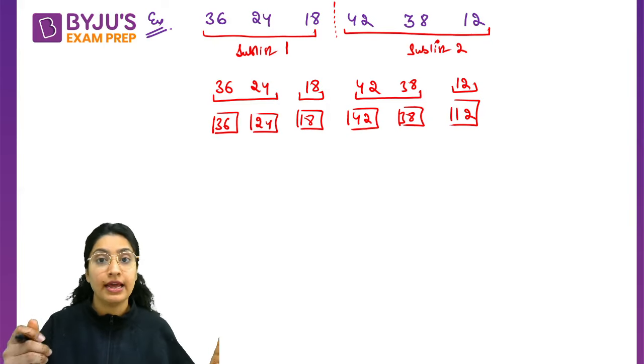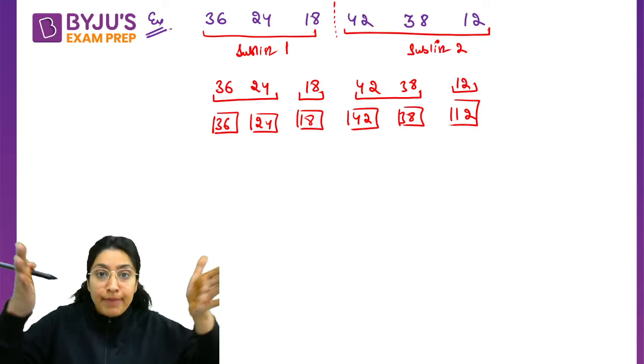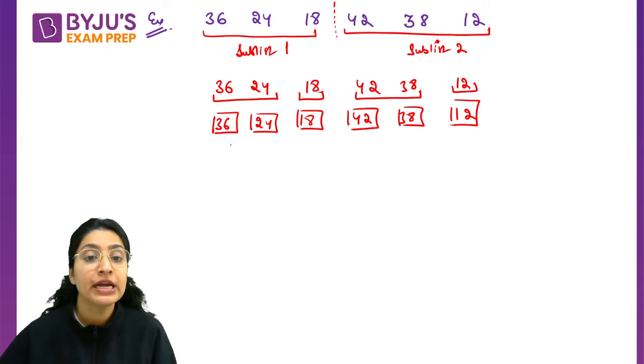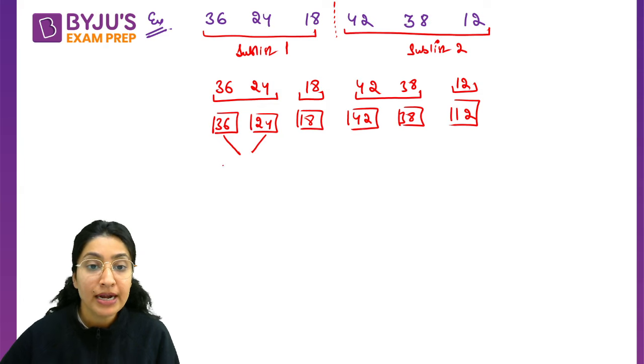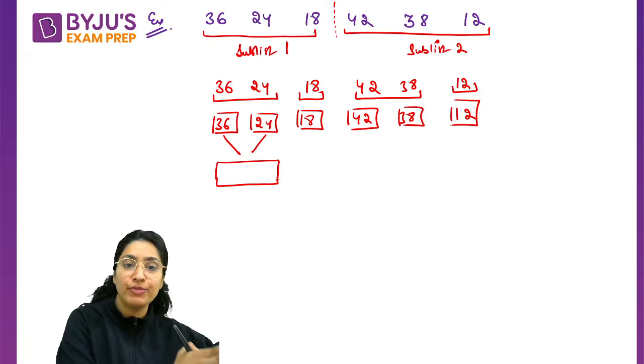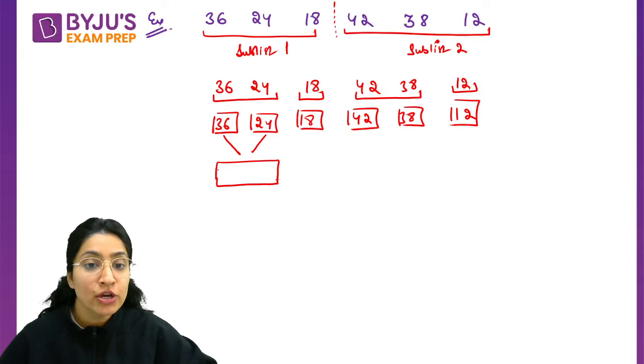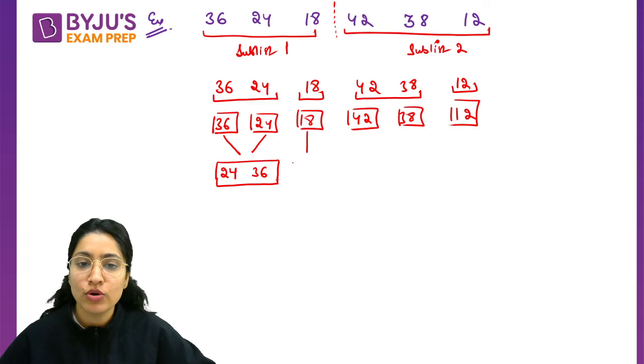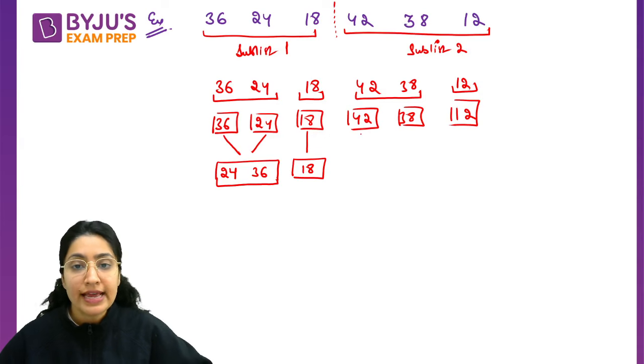Now what do you have to do? You have to combine them and sort them. How will you be combining? Take two elements. But when you take two elements, you have to sort them. How do you sort? Smaller element left, larger element right. So smaller on left, what comes? 24. And right comes 36.